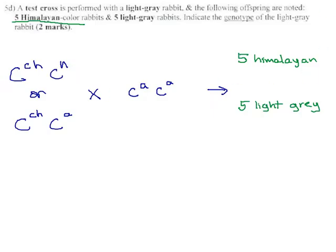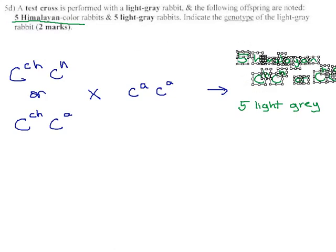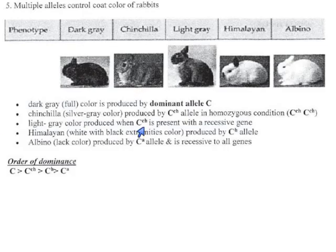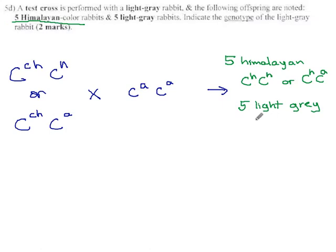If you're Himalayan, you could have two h's or you could have an h and an a. Either way you'd show the Himalayan color. So these Himalayans are either C^h C^h or C^h C^a. This is bothersome that we're getting all these colors we don't know the exact genotype for, but this is what happens in this sort of question. We also have light gray, which comes from C^ch with something recessive to it. So it's either C^ch C^h or C^ch C^a.